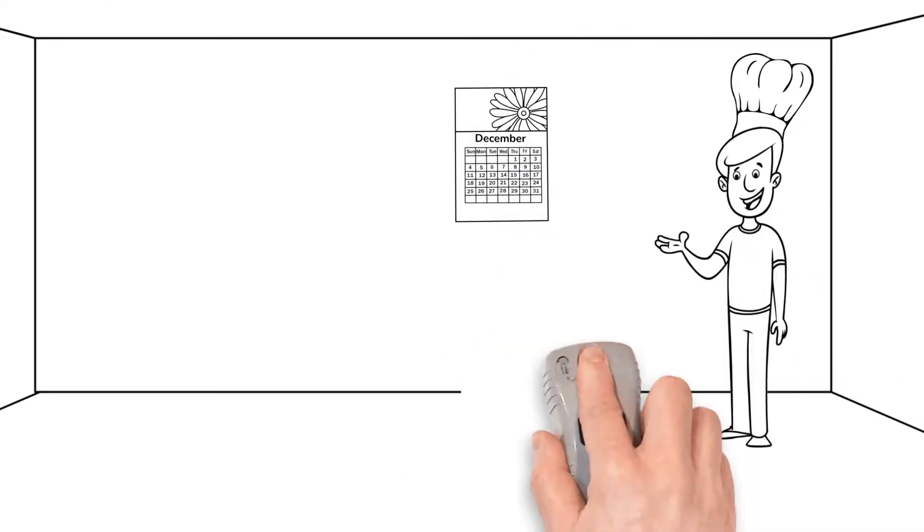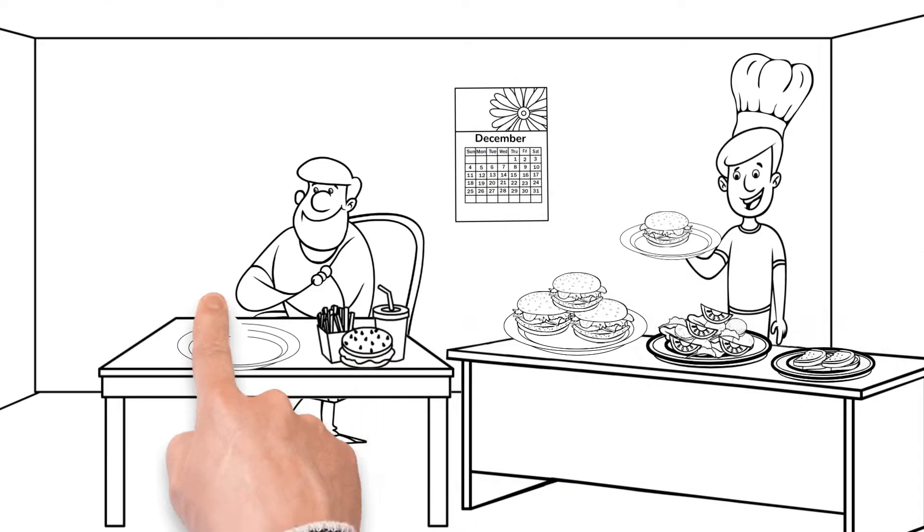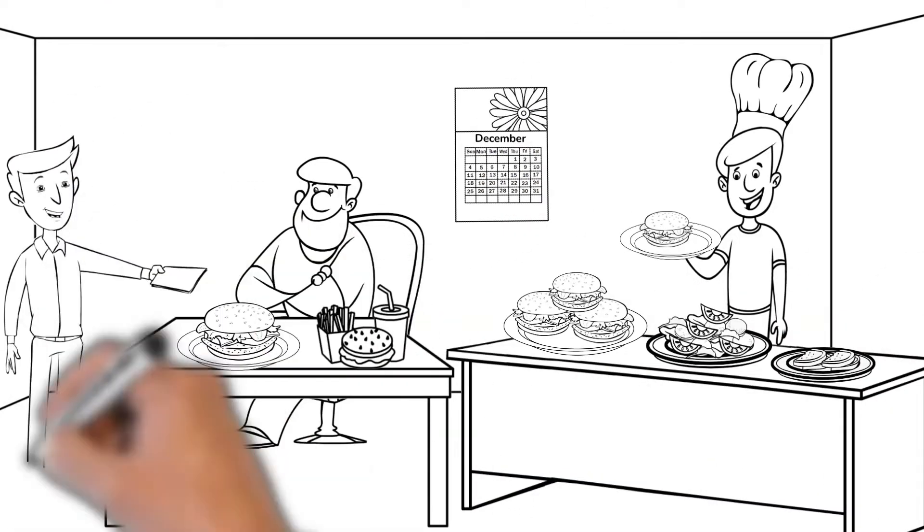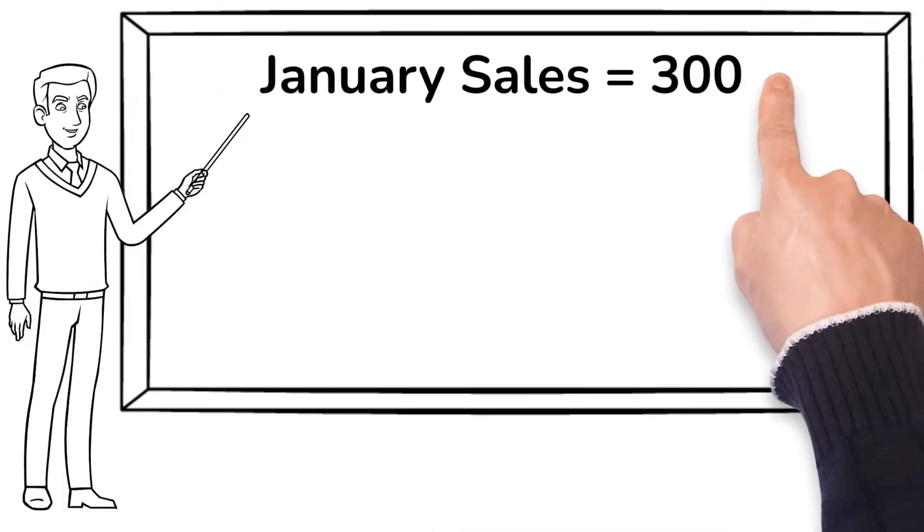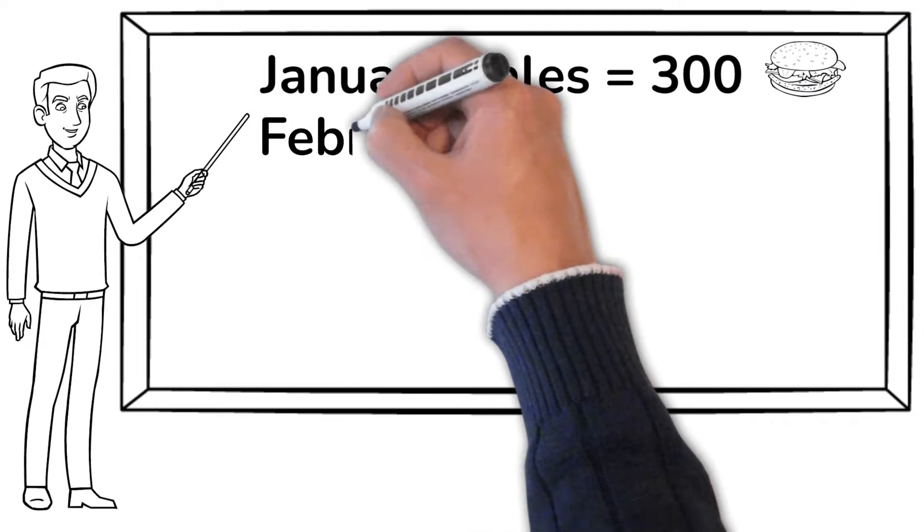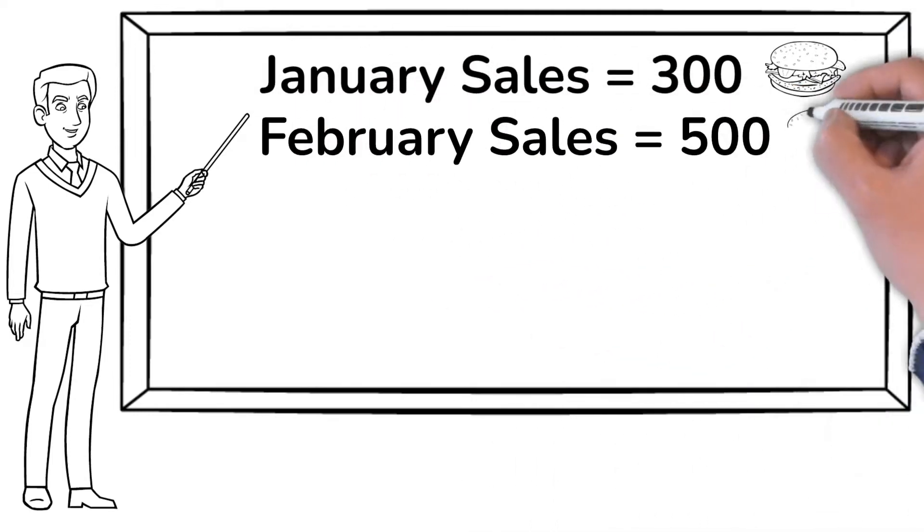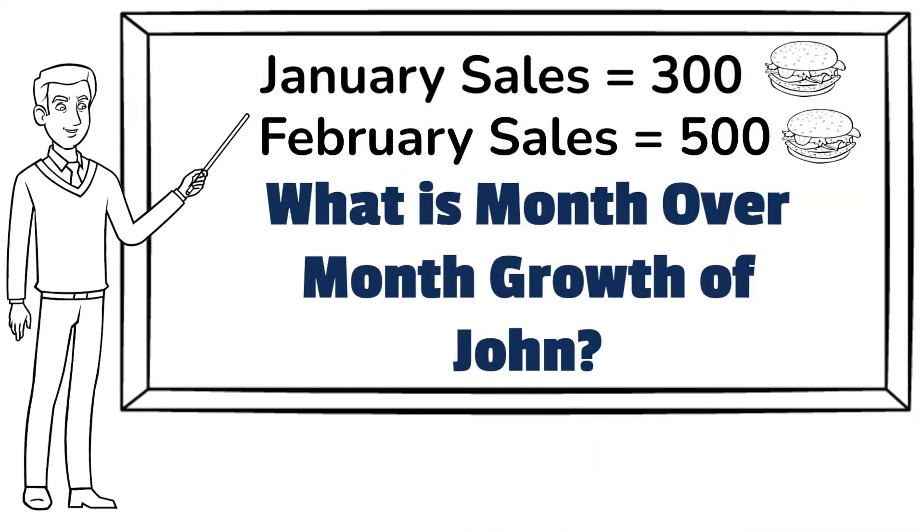Let's understand this with the help of an example. Suppose John had started a new business of selling burgers in the month of January. In January, he sold a total of 300 burgers. In February, he sold 500 burgers. What is John's month-over-month growth?